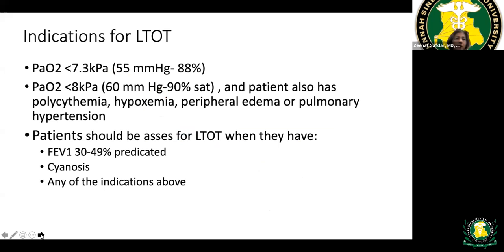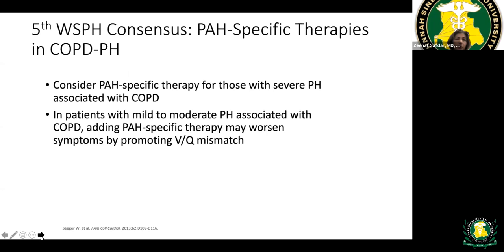Indications for long-term oxygen therapy include: oxygen saturation less than 90% with evidence of hypoxia, peripheral edema, PH, or polycythemia. Any patient with saturation less than 88% needs oxygen. Patients with FEV1 of 30–49% or the presence of cyanosis should also be prescribed oxygen.